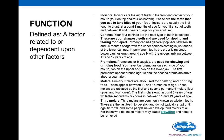Premolars — also called bicuspids because of their two cusps — are used for chewing and grinding food. Molars are your primary method for chewing or grinding. Third molars, commonly known as wisdom teeth, are often removed because they may erupt in an impacted state without a clear channel to come up, and if coming in crooked they can push the other teeth forward and cause misalignment.